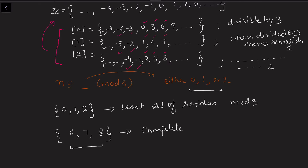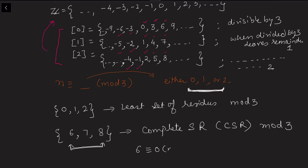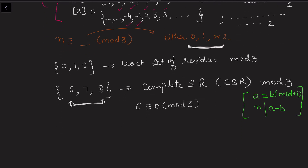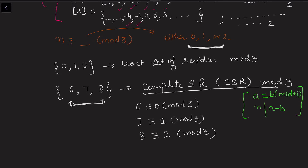First, the number of elements must equal the modulus — for mod 3 that is 3, and indeed {6, 7, 8} has three elements. Second, none of the elements should be congruent to each other; each should be congruent to exactly one of 0, 1, 2. We recall that a ≡ b (mod n) whenever n divides (a − b). So: 6 ≡ 0 (mod 3) since 3 | 6; 7 ≡ 1 (mod 3) since 3 | (7−1) = 6; and 8 ≡ 2 (mod 3). Therefore {6, 7, 8} is a complete set of residues mod 3.